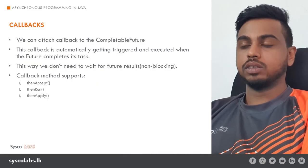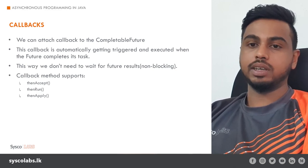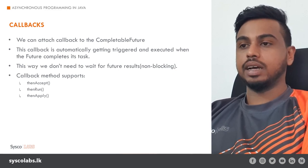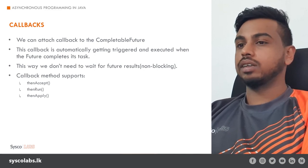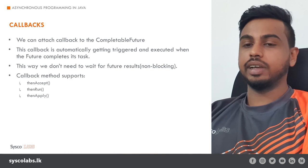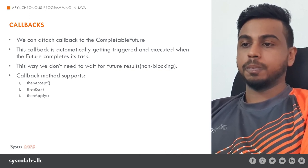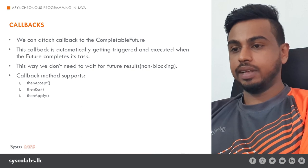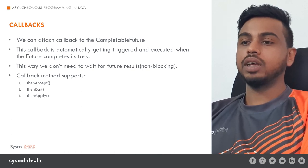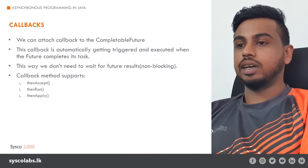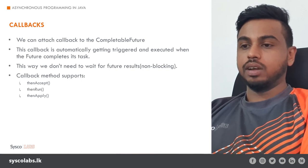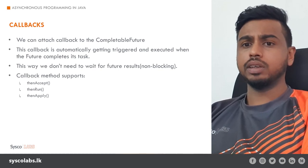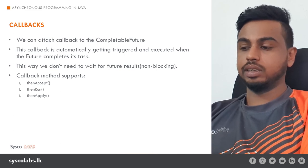Now let's talk about callbacks. Callbacks are important when doing asynchronous programming. CompletableFuture allows us to attach callbacks — when the task is completed, the callback is automatically triggered and executes the code inside that function. There are thenAccept, thenRun, and thenApply methods. The thenAccept and thenRun methods do not return anything, so if you want to run a piece of code after a task completes without returning anything, you can use those. The thenApply method is different — you can use it to transform the result of a CompletableFuture.